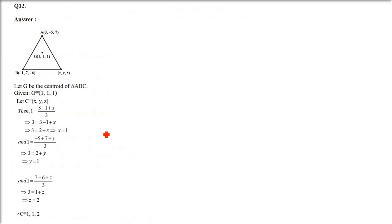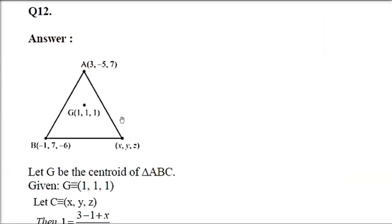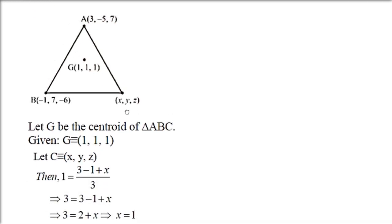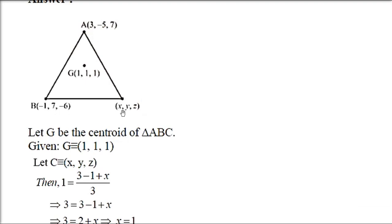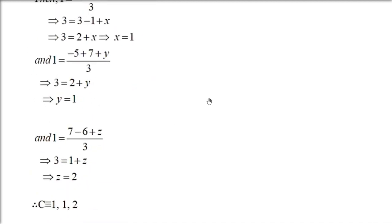Question number 12. The centroid of triangle ABC is at point (1, 1, 1). If the coordinates of A are (3, -5, 7) and B are (-1, 7, -6), find the coordinates of point C. Use the centroid formula: (x1+x2+x3)/3 = 1, (y1+y2+y3)/3 = 1, (z1+z2+z3)/3 = 1. Two vertices are given; assume C = (x, y, z) and solve. The answer is C = (1, 1, 2).